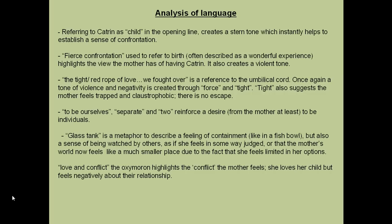'The tight red rope of love we fought over' is a reference to the umbilical cord, but once again the tone is violent and negative, created through the words 'fought' and 'tight.' 'Tight' also suggests the mother feels trapped and claustrophobic, giving the idea that there is no escape. 'To be ourselves, separate' — the repetition of this idea reinforces the desire, from the mother at least, to be individuals.